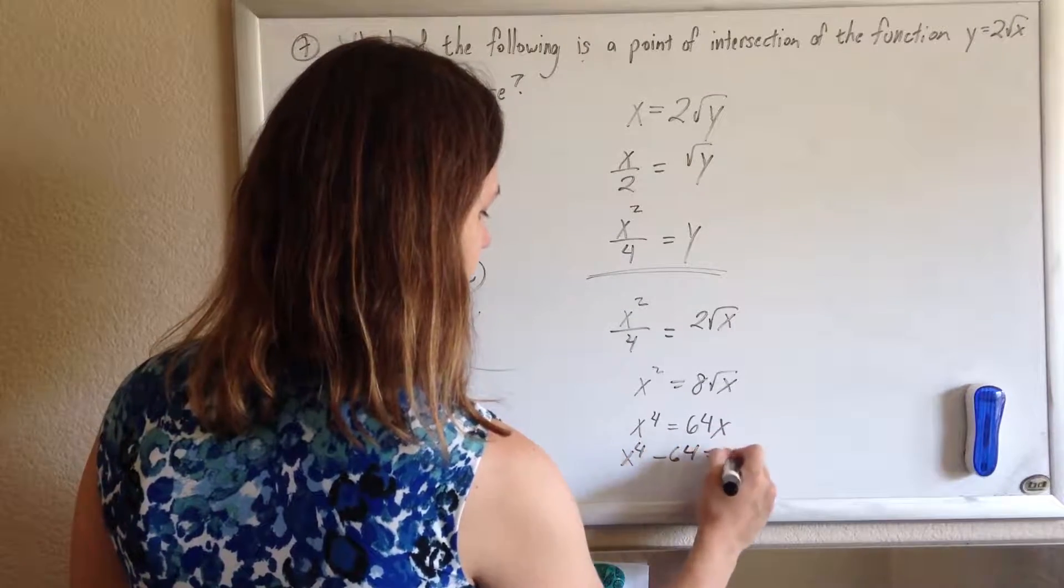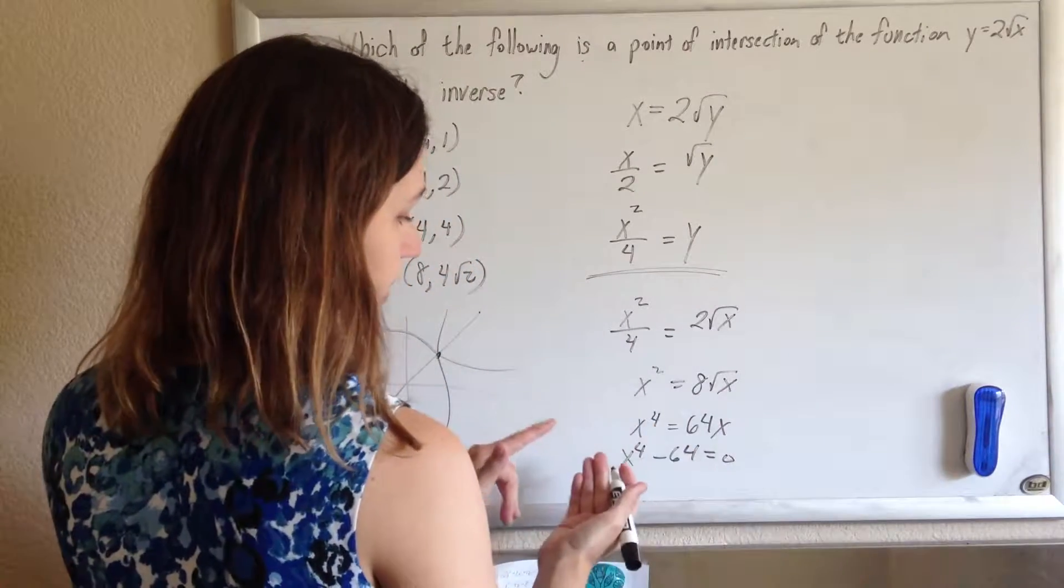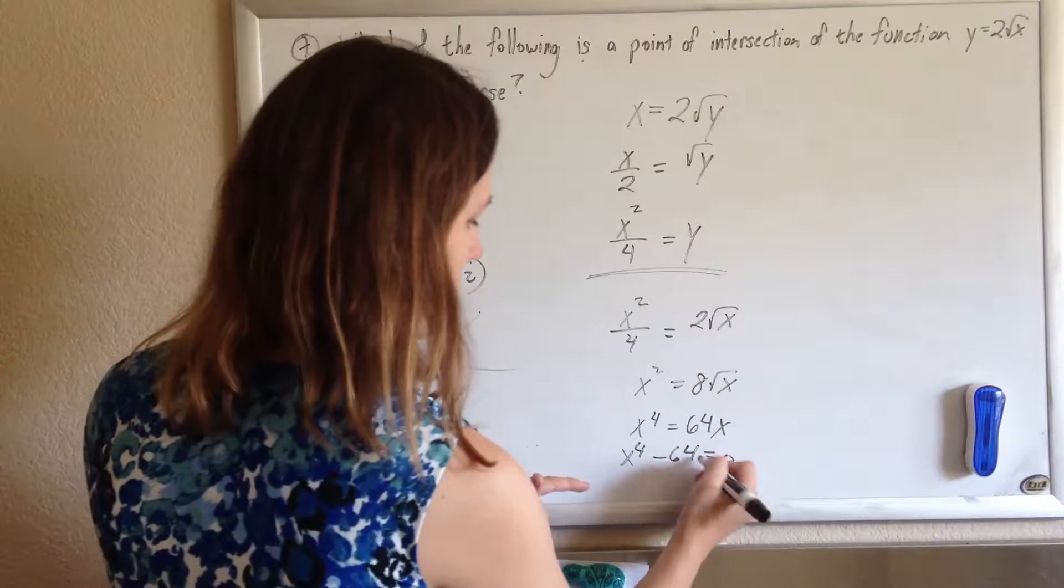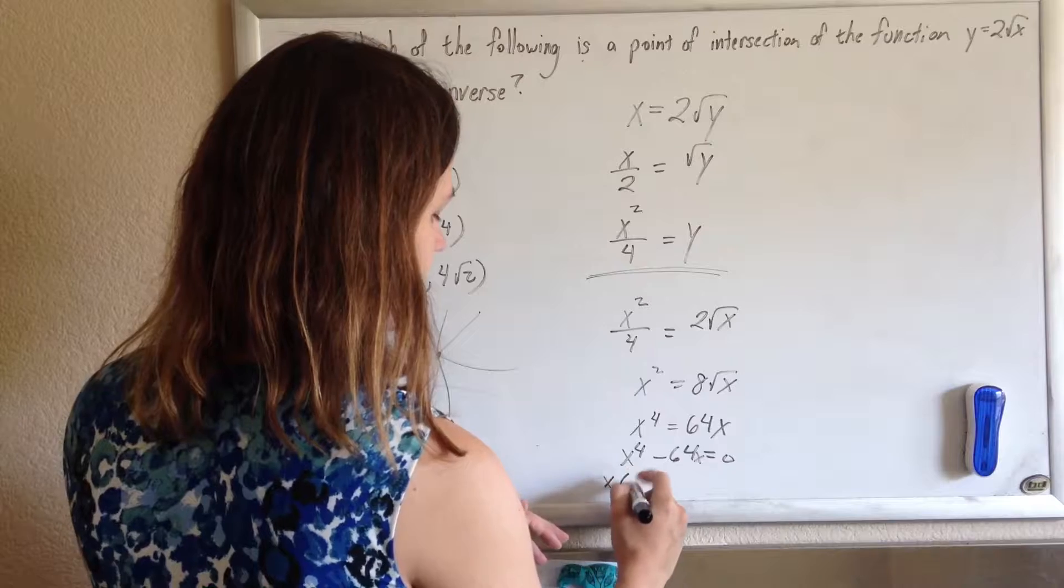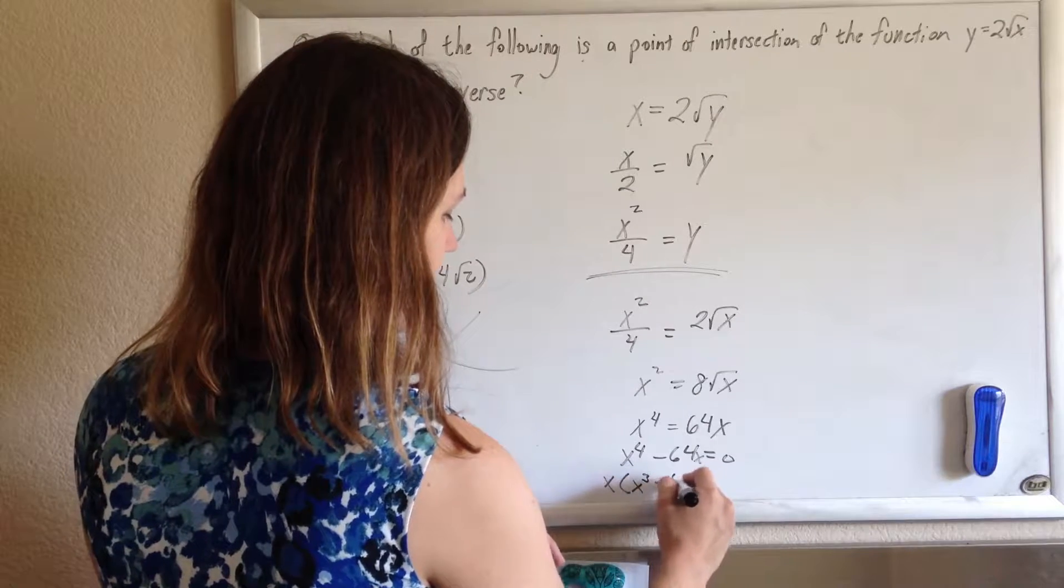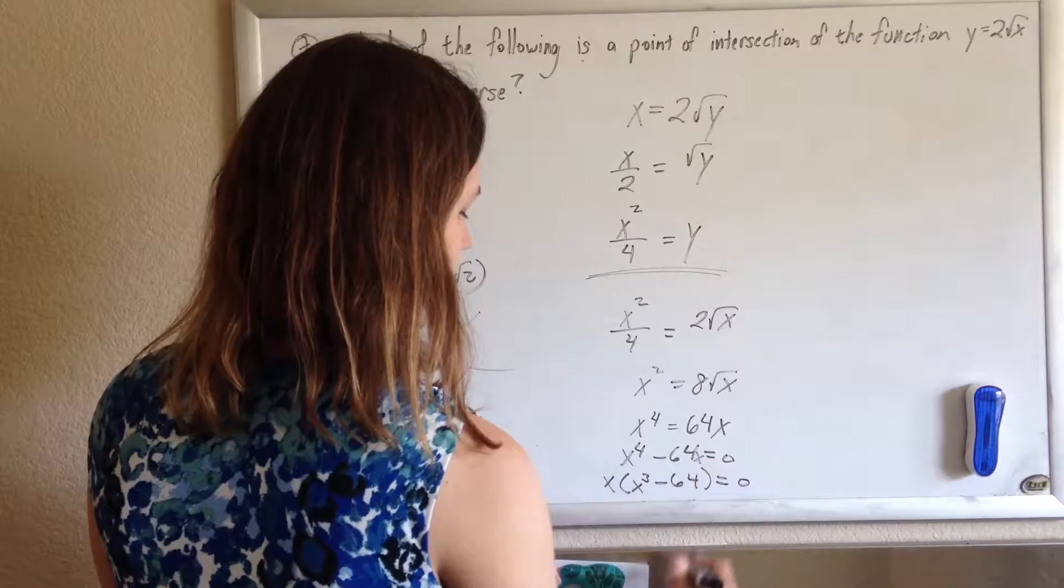Anytime I have a power that's bigger than 1, my goal is to set it equal to 0. Let's set it equal to 0 and try to factor it. So, I'll take an x out first, just to get this common factor.